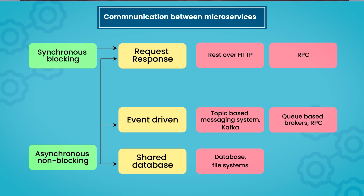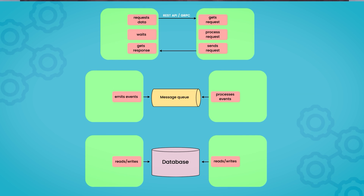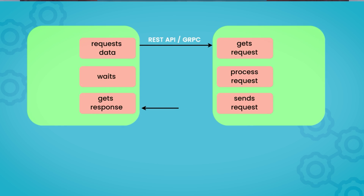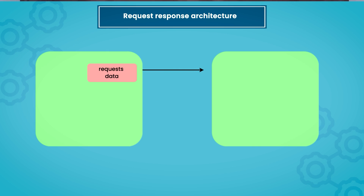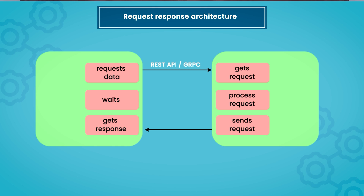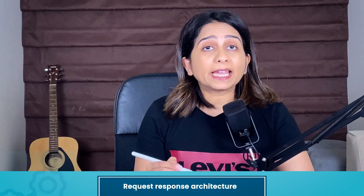Let's look at it in more detail. These are the three different types of communication. In request-response architecture, we request data over a REST API, gRPC, or RPC and get a response. The process on the calling microservice either waits for the response and then continues — synchronous blocking — or, in the case of asynchronous non-blocking, it will not wait but will process the response once it is received from the other microservice.